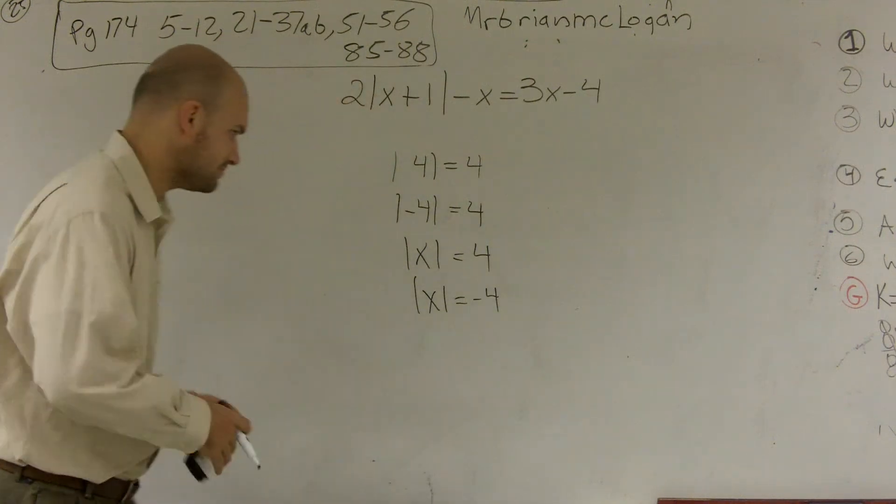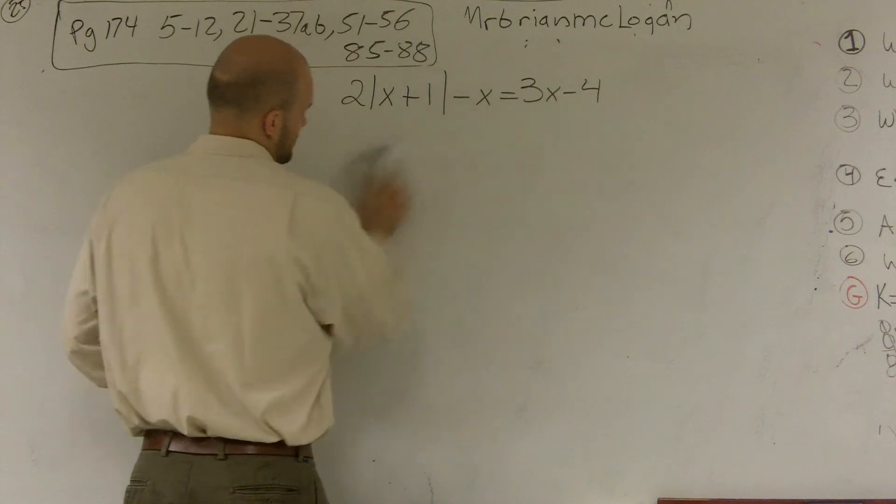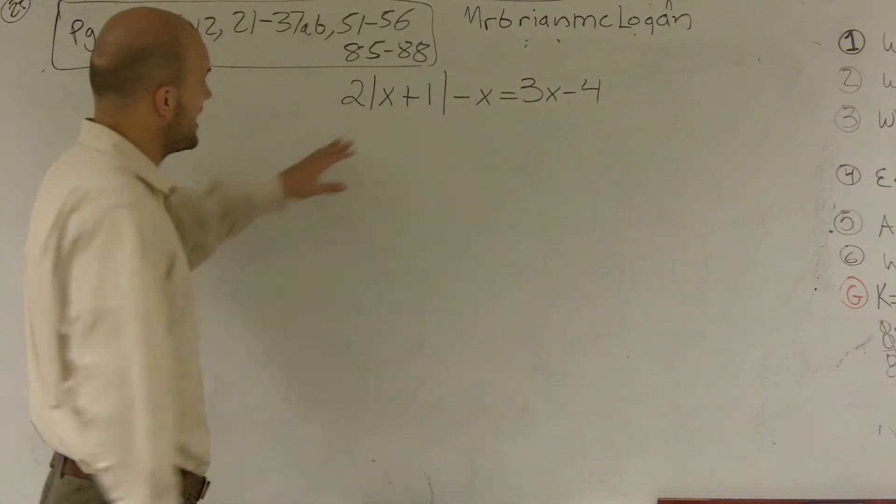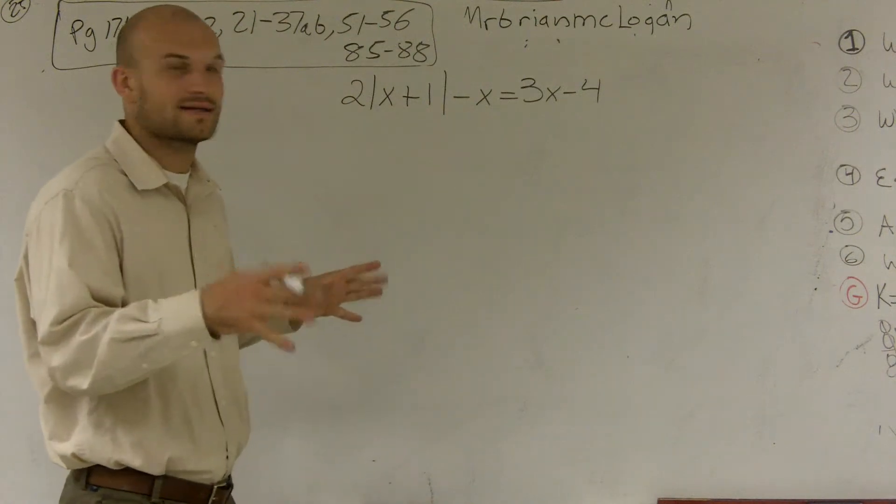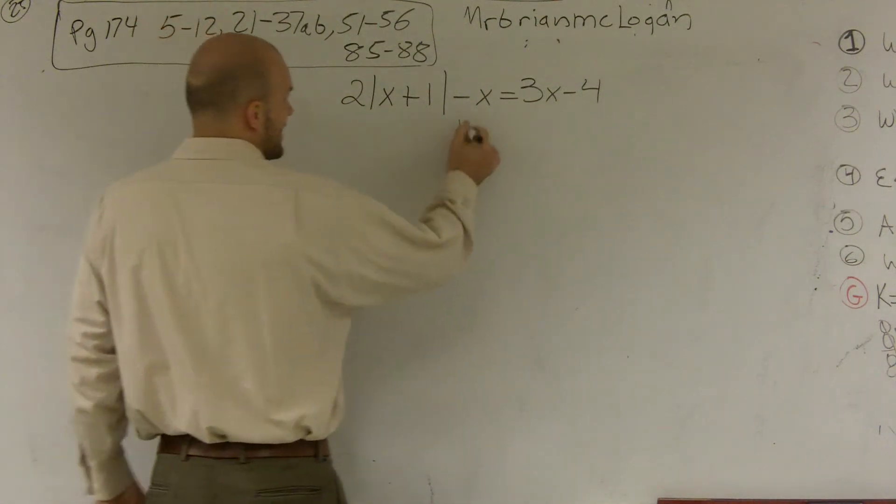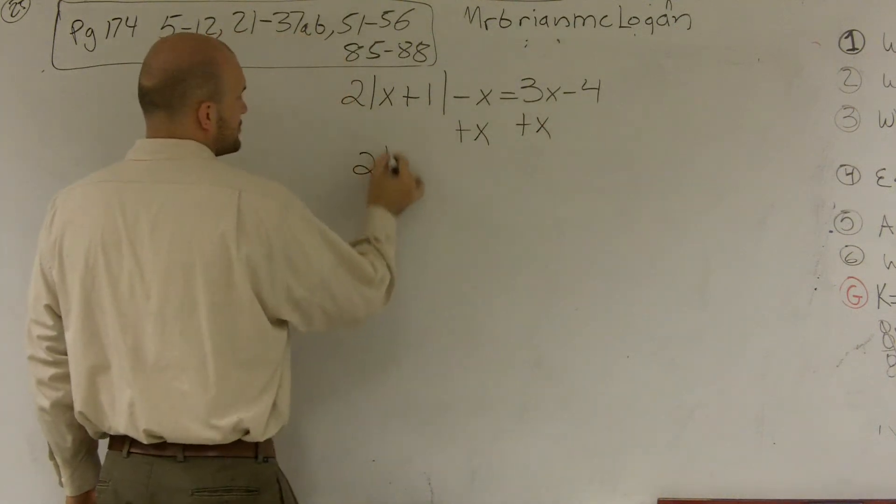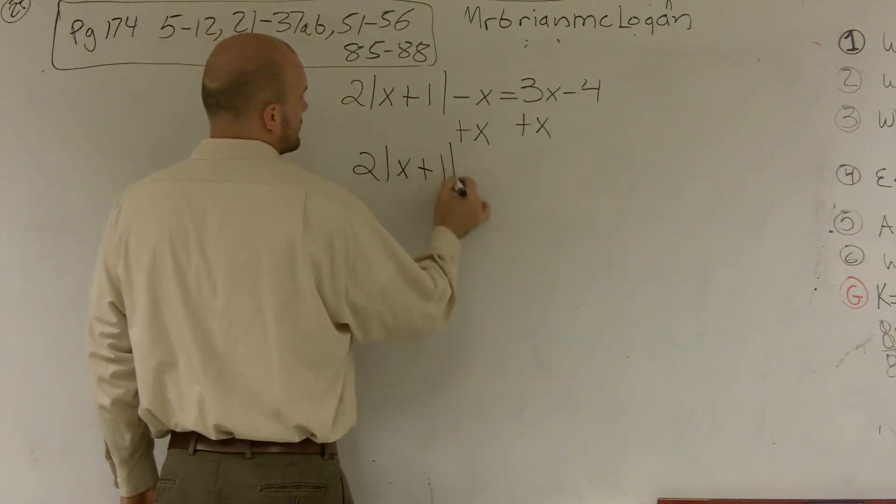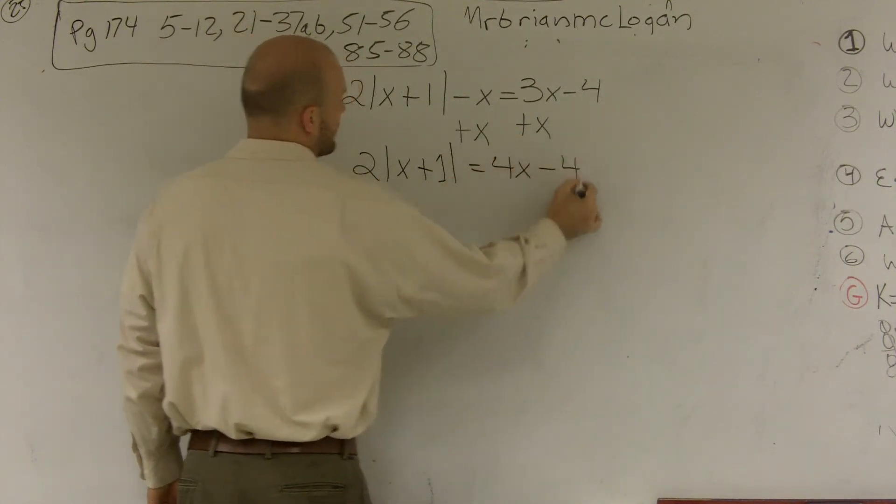I have a 2 and a negative x on this side. I need to get rid of all that. So what I'm going to do is I'm going to add an x, and I'll have 2 absolute value of x plus 1 equals 4x minus 4.